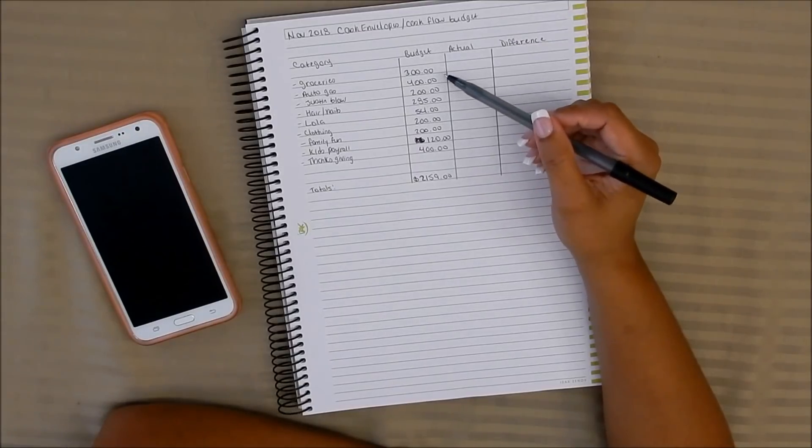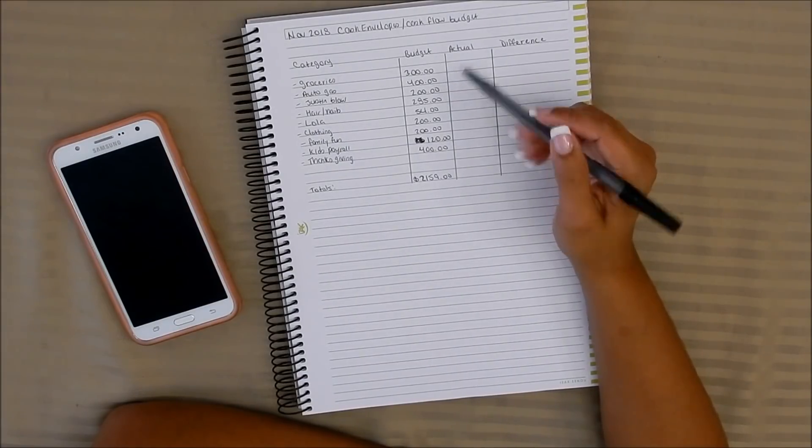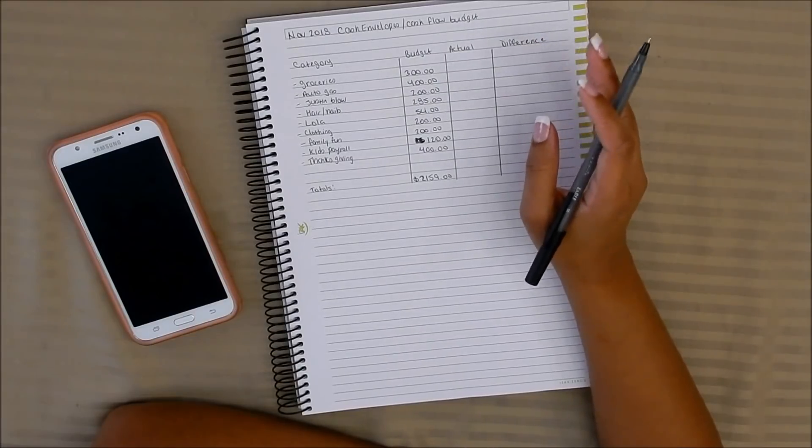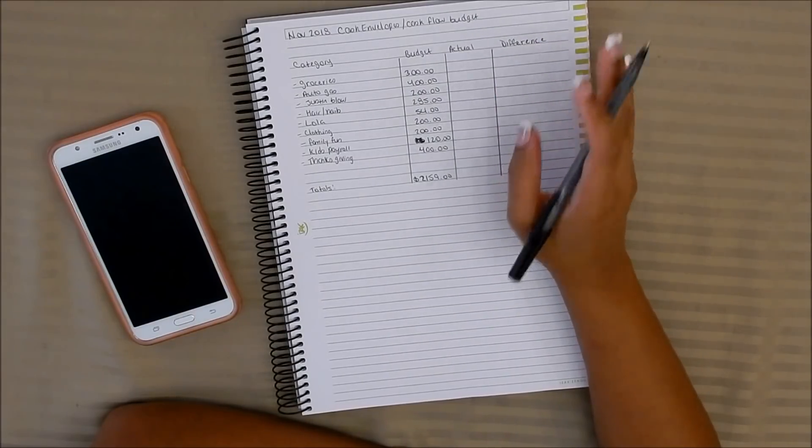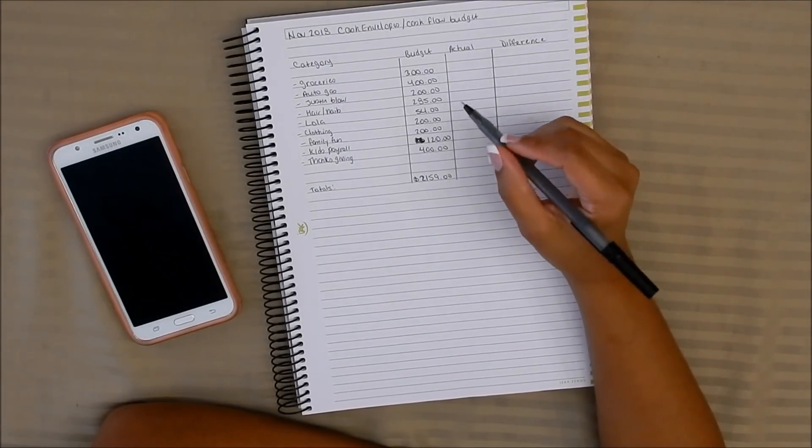For gas we're budgeting out $400. The hubby, I'm giving him $200 for blow money. He needs new shoes, so he's going to probably go between Ross and Marshall's. With a hundred dollars he should be able to find two pairs of shoes, but he also needs to get some new work pants.